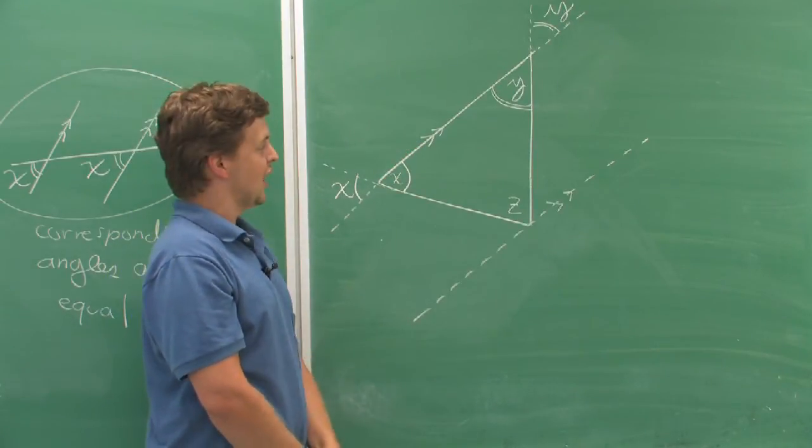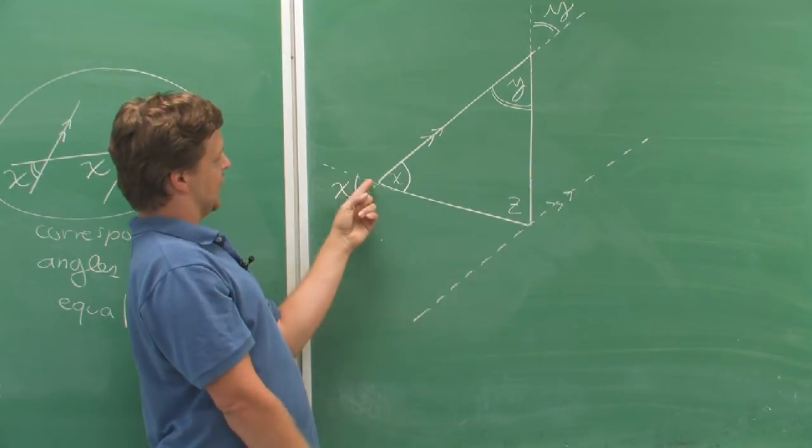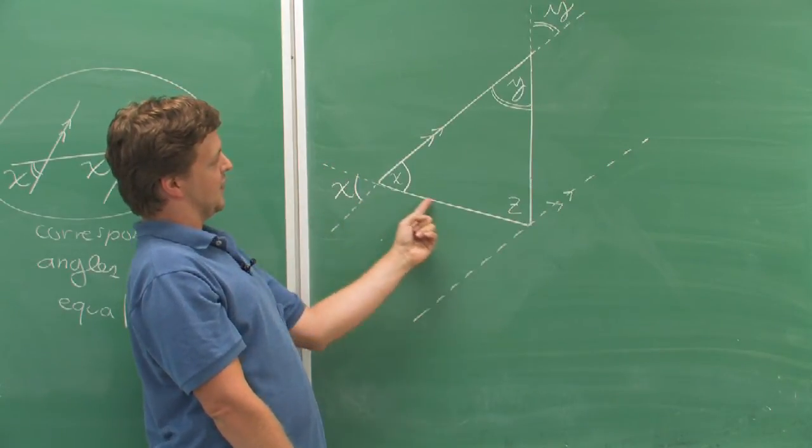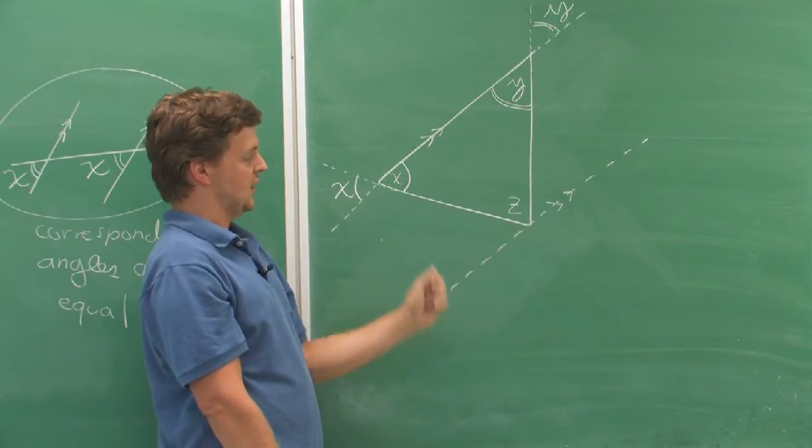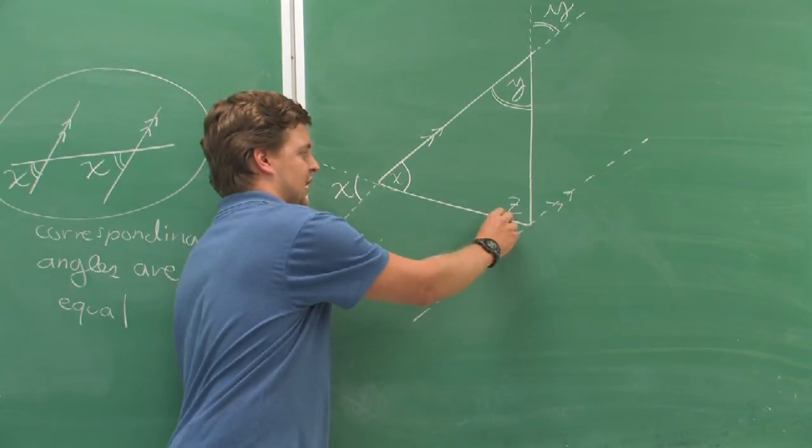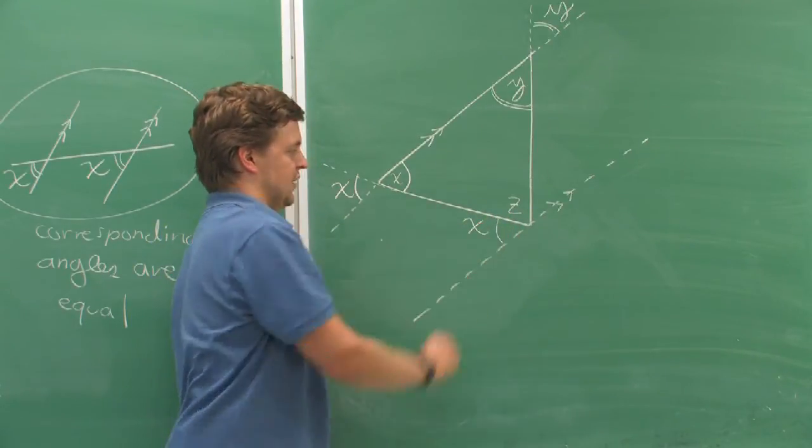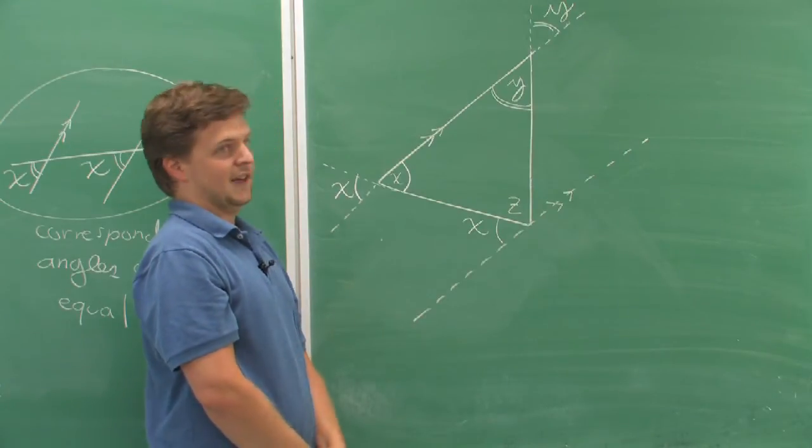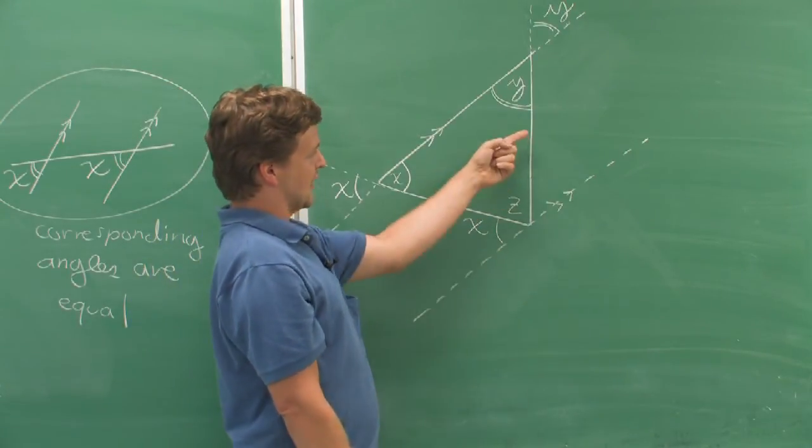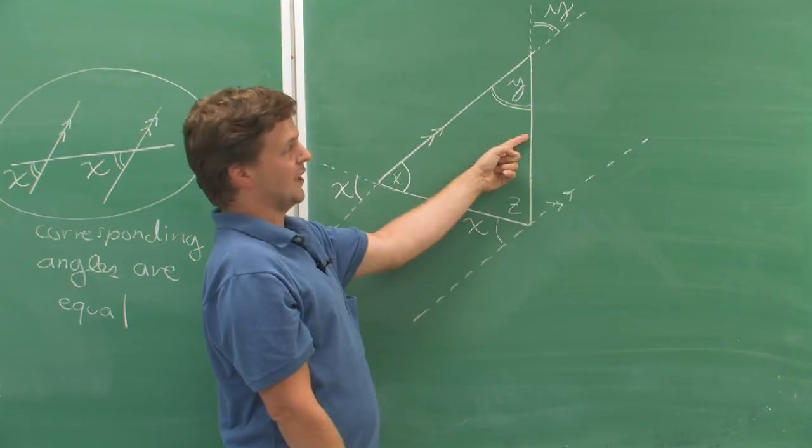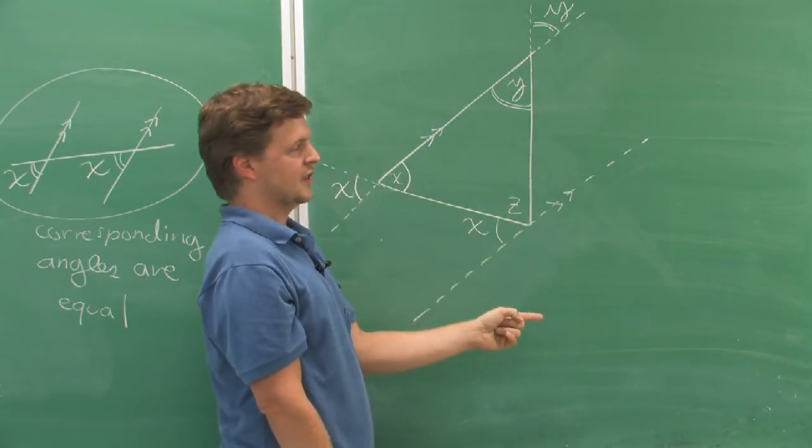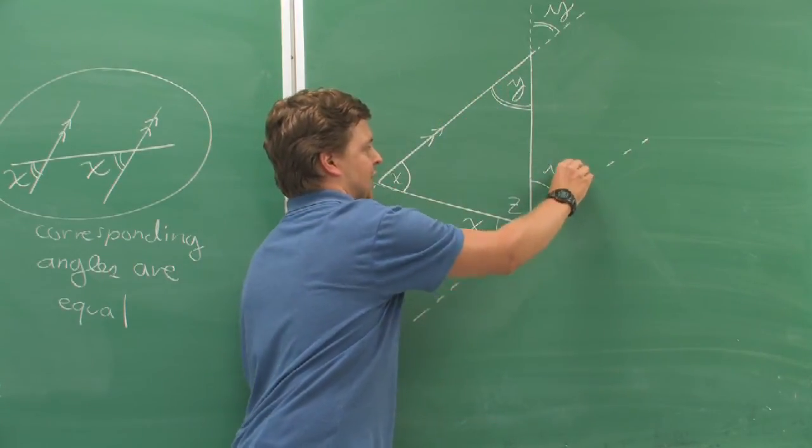Now, I have parallel lines. And first, I can note that this side of the triangle is a line crossing those parallel lines. So this angle is also x. Again, I can note that this side of the triangle is a straight line crossing parallel lines, so this angle is y.